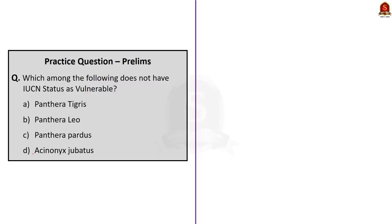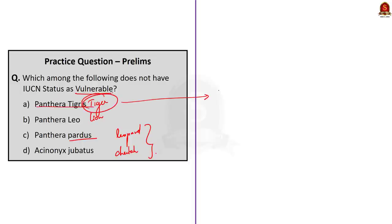The fifth question: which of the following does not have the IUCN status as vulnerable? Option A — Panthera tigris (tiger), Option B — Panthera leo (lion), Option C — Panthera pardus (leopard), Option D — Acinonyx jubatus (cheetah). The IUCN status of tiger is endangered, not vulnerable. Therefore tiger is the only one that does not have IUCN status as vulnerable. The right option is option A — Panthera tigris. The other three — lion, leopard and cheetah — are all vulnerable according to IUCN.